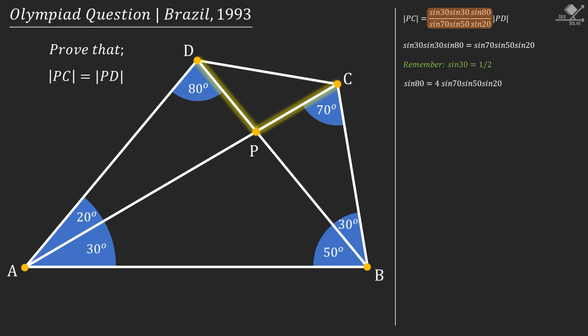First, since we know the value of sine 30 is 1 over 2, we can write like this. Also, instead of sine 70, we can write cosine 20.